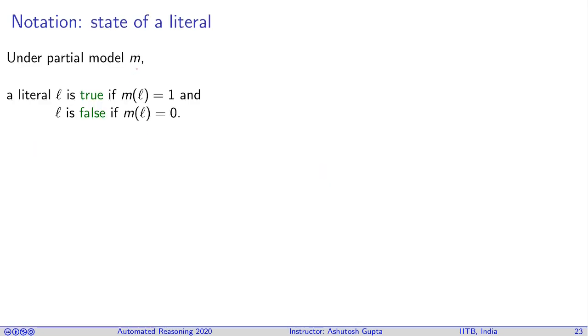Under a partial model we can say a literal is true if literal can be evaluated to one in that model. We say a literal is false if the literal is evaluated under that model to be zero. Otherwise we call the literal unassigned.